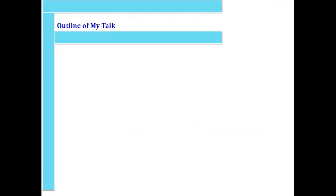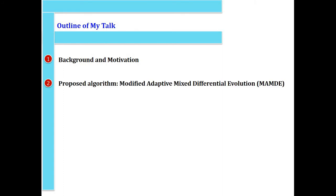The outline of my talk is given as following. First, we will talk about background and motivation of this research. Then we will present the proposed algorithm, which is named Modified Adaptive Multi-Differential Evolution Algorithm. Then we will present the optimization problem of cylindrical gear design. In the second part, we will discuss the results of the algorithm for this problem. And finally, we will conclude the presentation by some conclusions and possible future works.